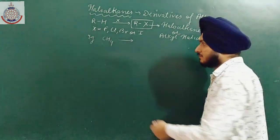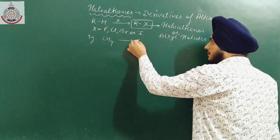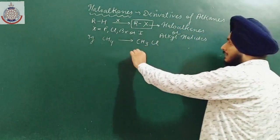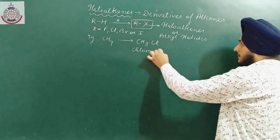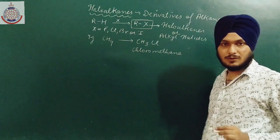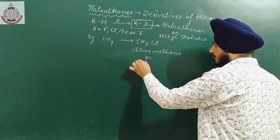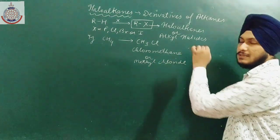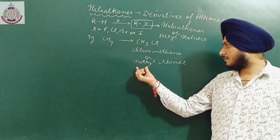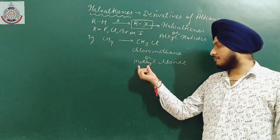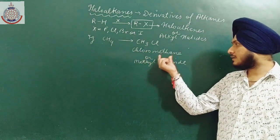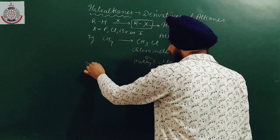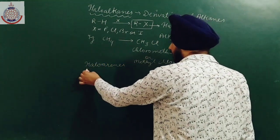For example, if we have methane and I replace a hydrogen with chlorine, then we will get CH3Cl, known as chloromethane or methyl chloride. Similarly, we get methyl fluoride, bromomethane or methyl bromide, and iodomethane or methyl iodide.